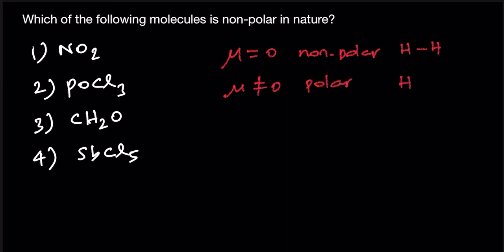For example, HCl — there will be a slight positive charge on one side and a slight negative charge on the other side, making it a polar molecule.